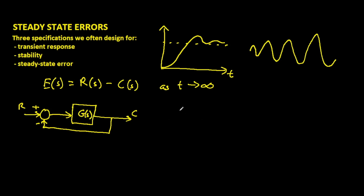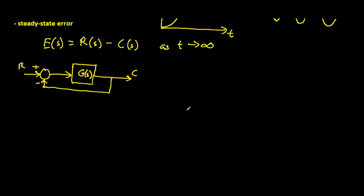Let's take a simple scenario where our input to this system is a unit step function. If my R of S is a unit step function, then my R of S will simply be 1 over S. Let's also take the case where G is simply a proportional gain — in other words, your output of the plant is simply a constant multiplied by your input. We can determine our steady-state error: E is equal to R minus C.